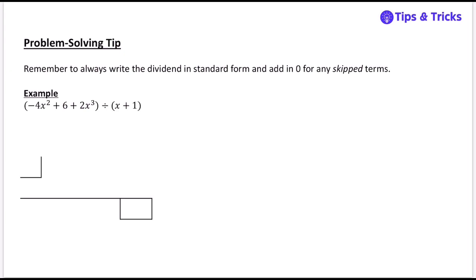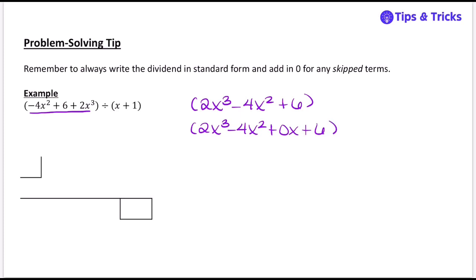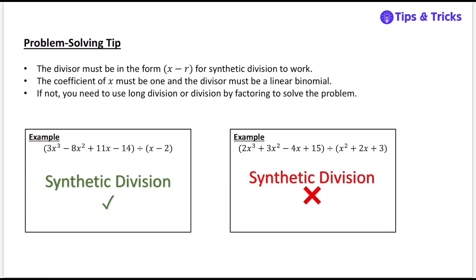Another important tip: always write the dividend in standard form and add in zeros for any skipped terms. For example, if the dividend is out of order, rearrange it first — say, 2x cubed minus 4x squared plus 6. Then check for skipped degrees. If there's no x term, add 0x. So it becomes 2x cubed minus 4x squared plus 0x plus 6. Also remember: synthetic division only works when the divisor is a linear binomial with coefficient 1 on x. If not, use long division.